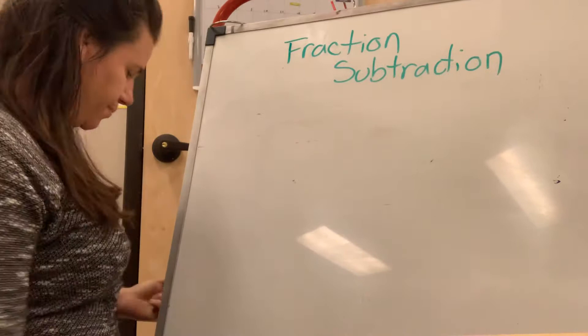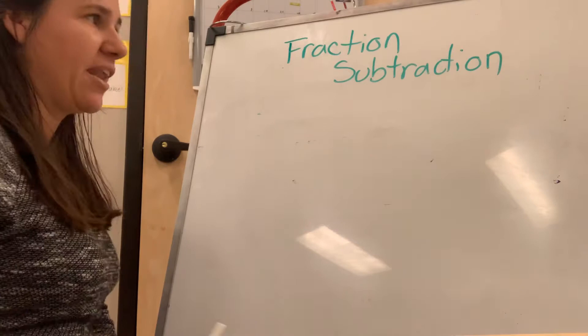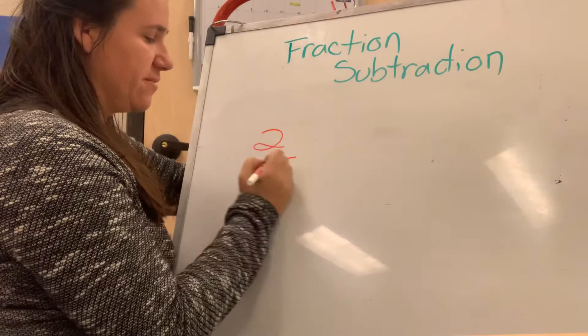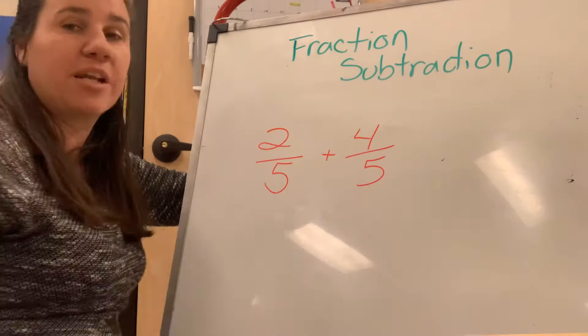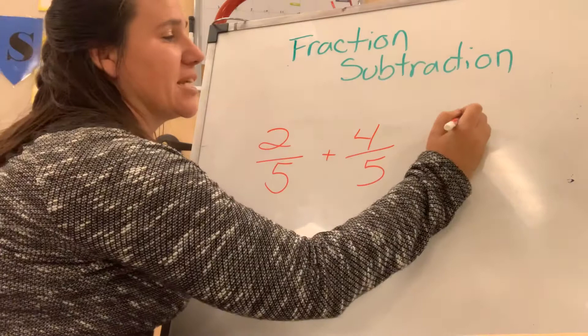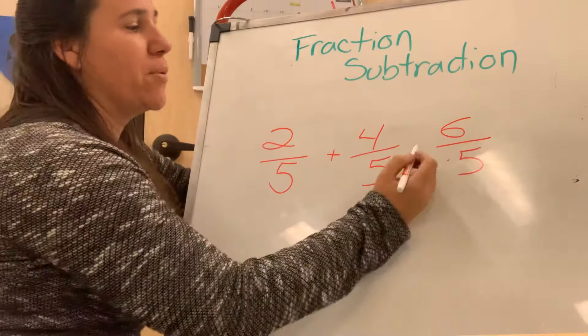Okay. Let's start with one with like denominators. So let's say that I am adding two-fifths and four-fifths. So two-fifths plus four-fifths. Well, the first step we do is we check our denominator. Our denominator is the same, so we can add straight across. Two plus four is six. And we keep the denominator the same, so we have six-fifths.